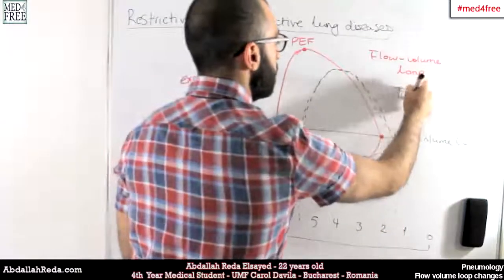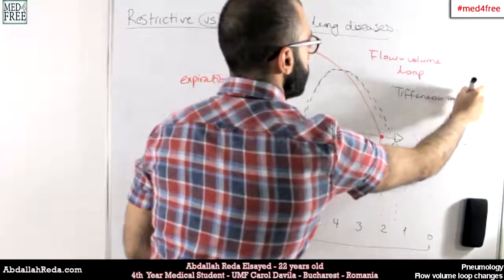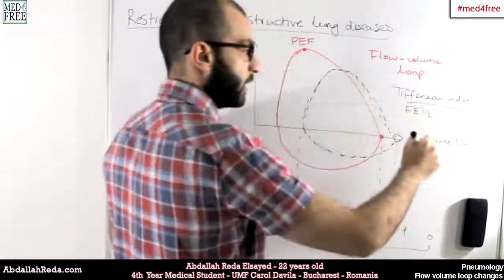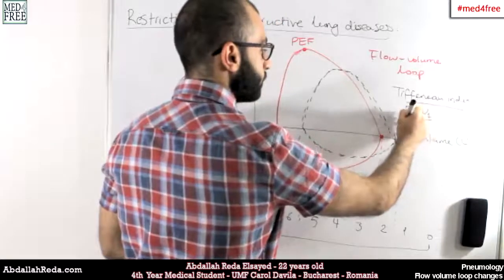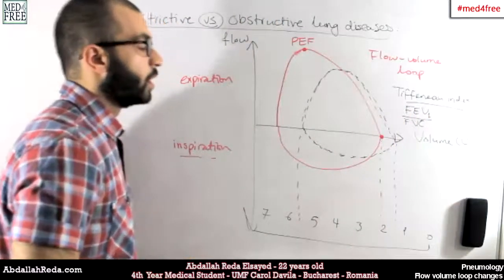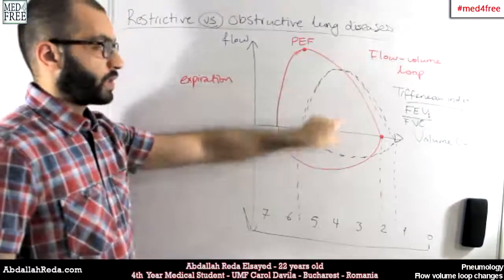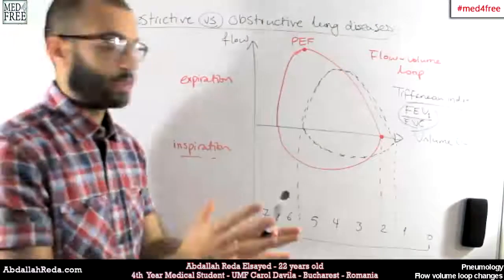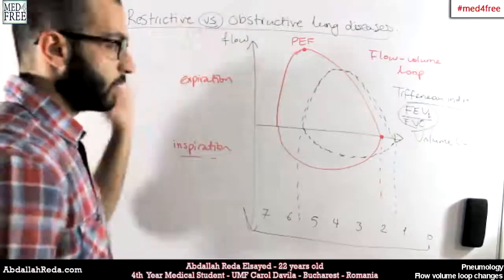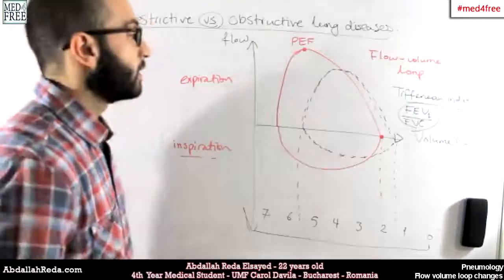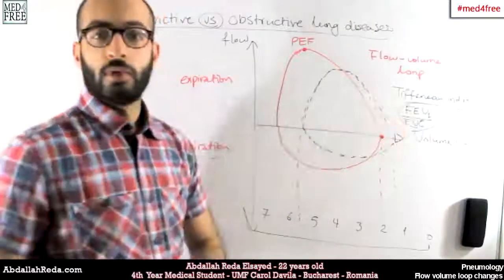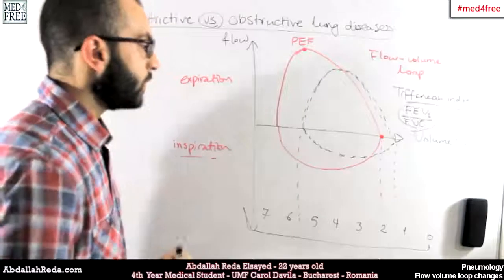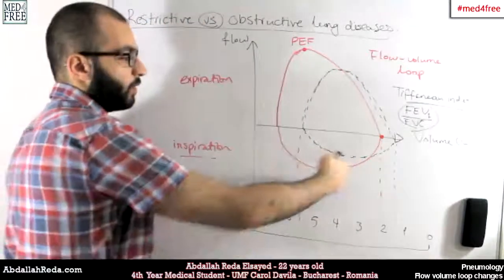The proportions between expiration and inspiration volumes are maintained. This is important because of the Tiffeneau index — the ratio of forced expiratory volume in one second (FEV1) divided by the vital capacity (FVC). Because proportions are kept in restrictive diseases, the Tiffeneau index remains the same before and after the disease, but the volumes decrease.